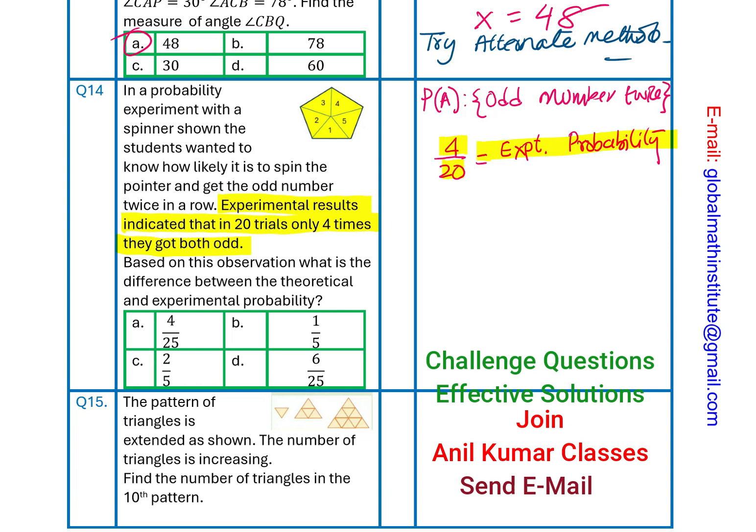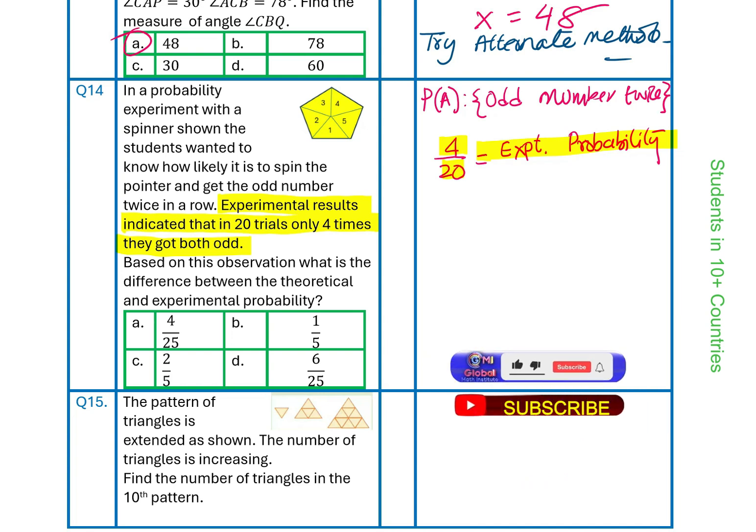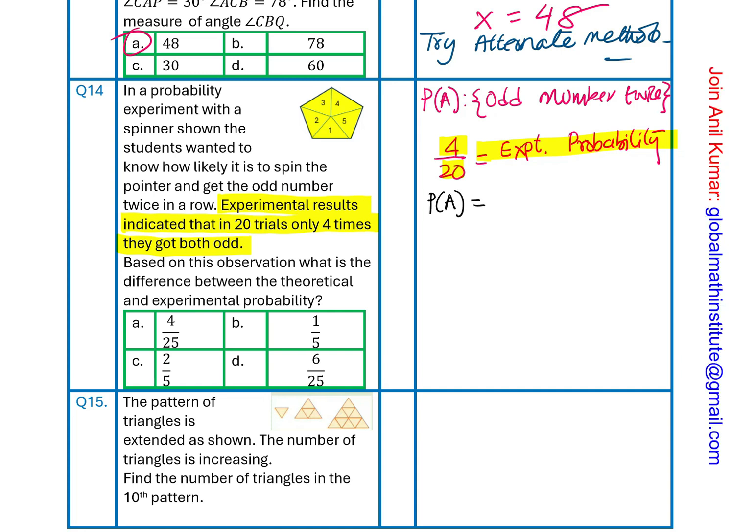Based on this observation, what is the difference between the theoretical and experimental probability? So, now, you have to find theoretical probability also. And then, the difference between theoretical and experimental probability will give you the answer, which is one of these. So, let us find theoretical probability, which we are saying the probability of the event A, which is odd number twice in a row.